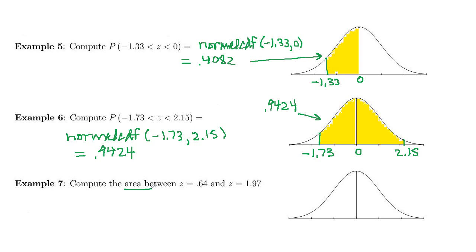And then last example, compute the area between z is 0.64 and 1.79. That can also be written as the probability that 0.64 is less than z is less than 1.79. So area corresponds to probability, which is proportion of the data. This is also normal CDF.